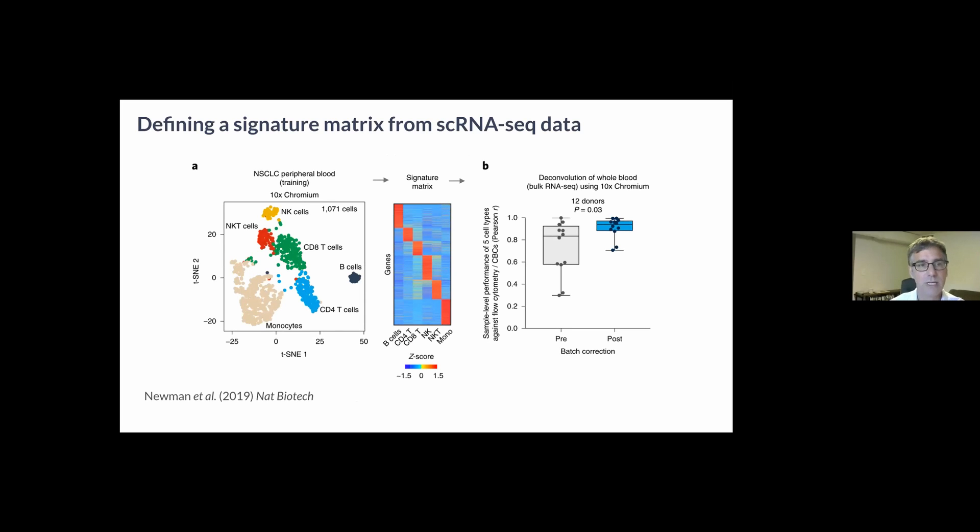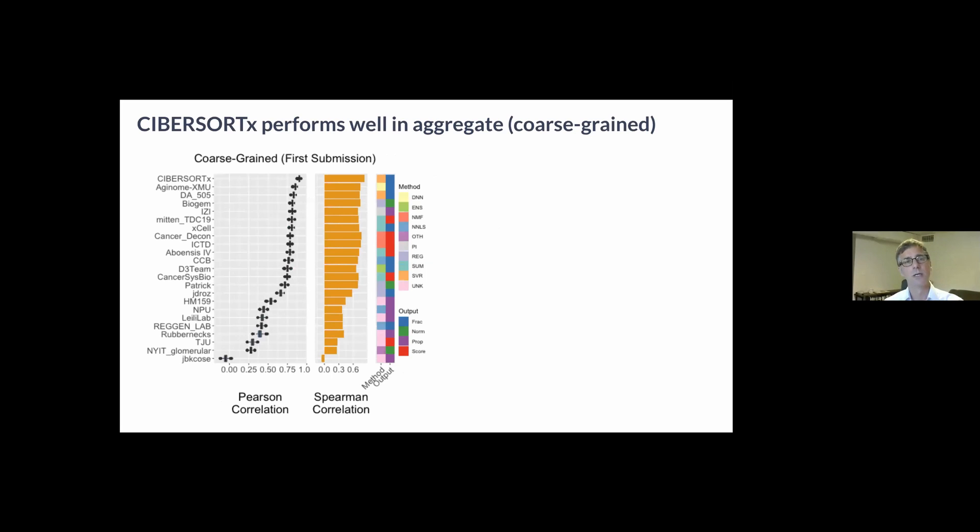There are several features of CIBERSORTx we did not use in this challenge. These included an ability to predict expression profiles of the individual cell types within the input data and to define signature matrices from single cell data. We defined an aggregate score as the mean correlation over cell types and to get a sense of the variance of the methods we bootstrapped the predictions.